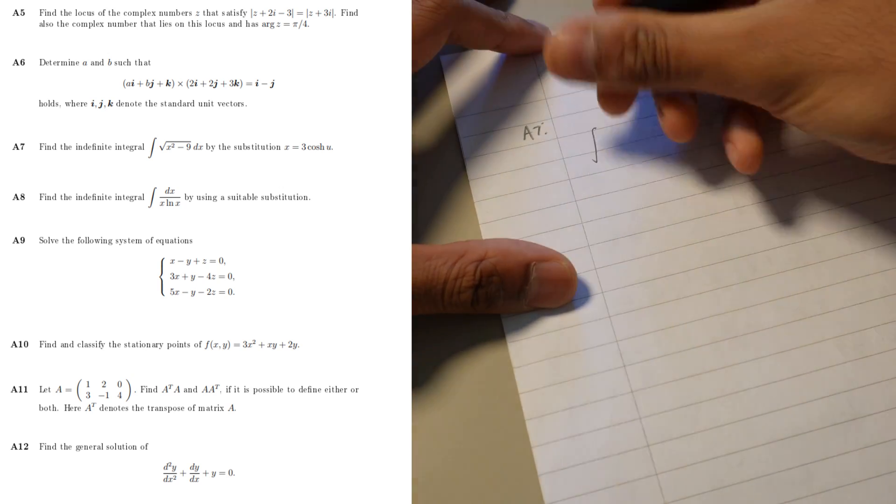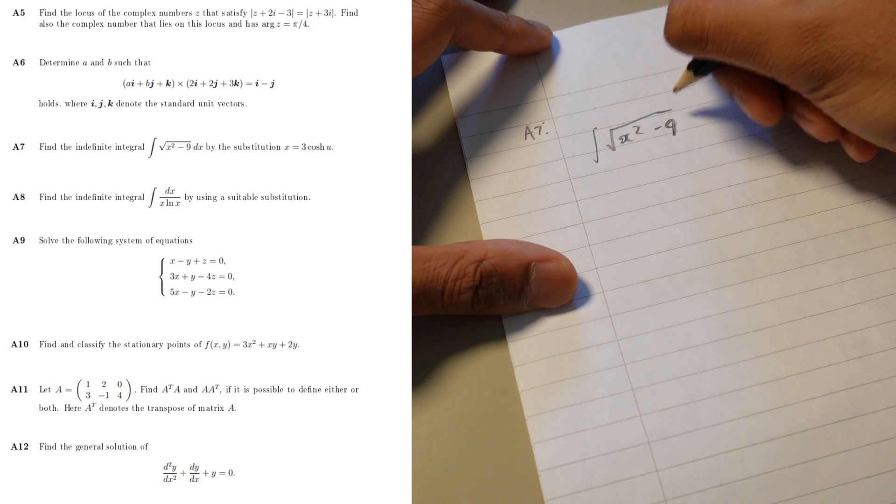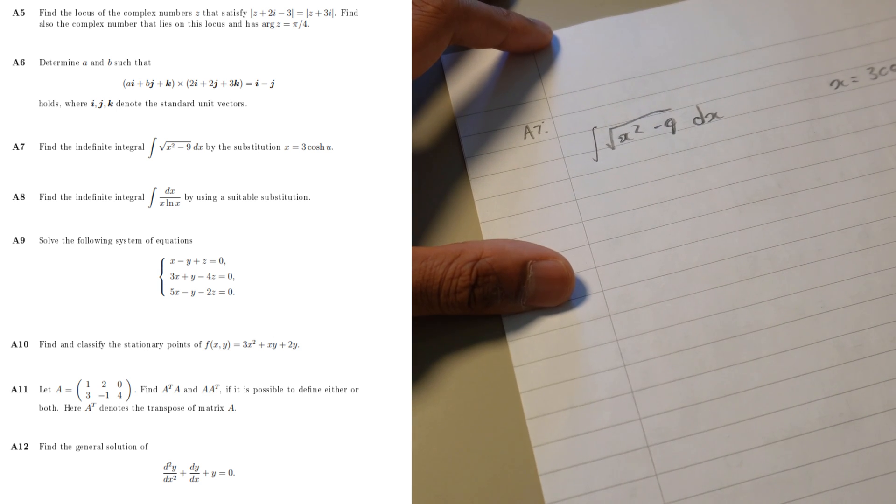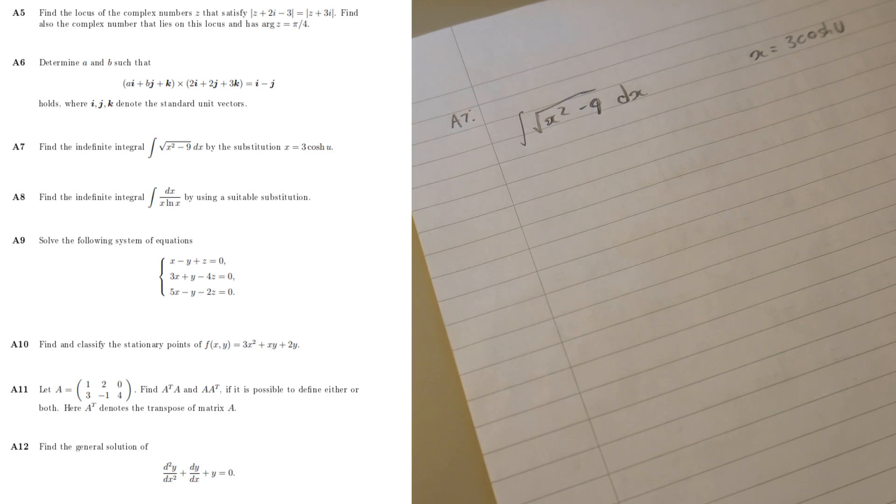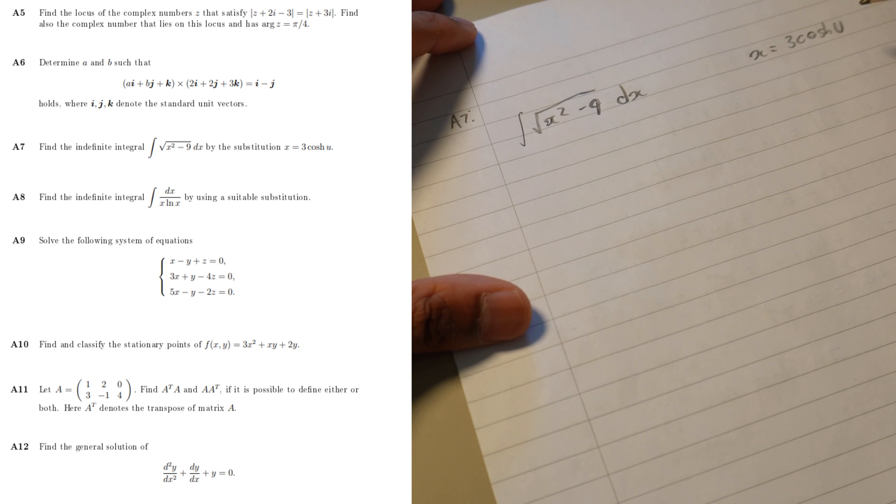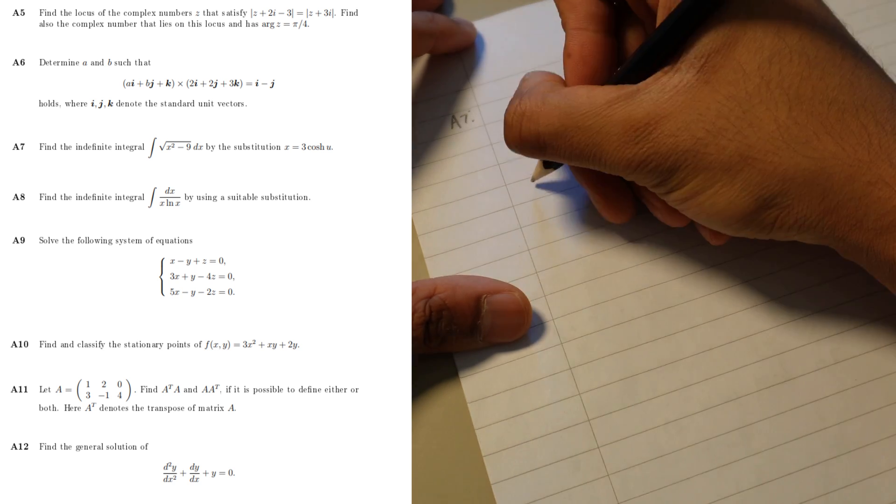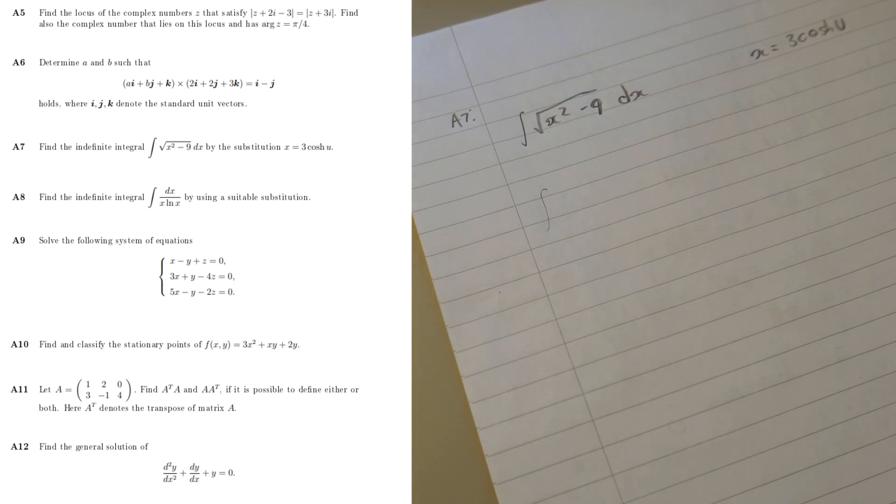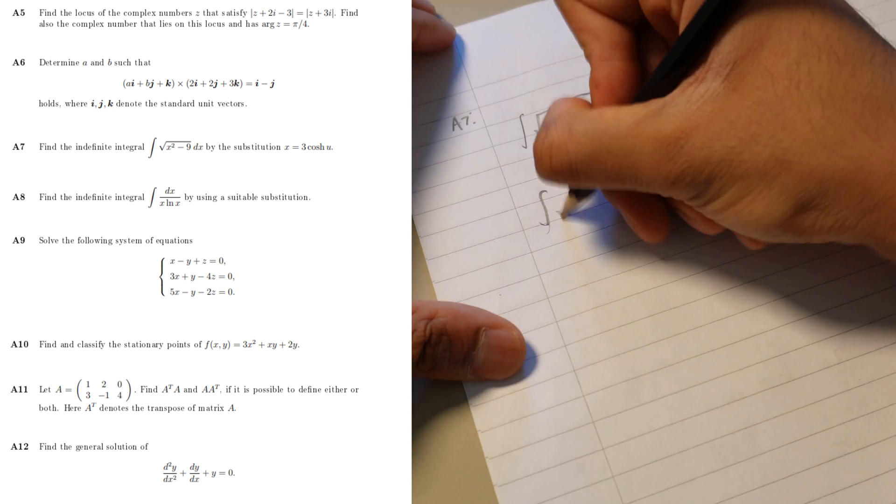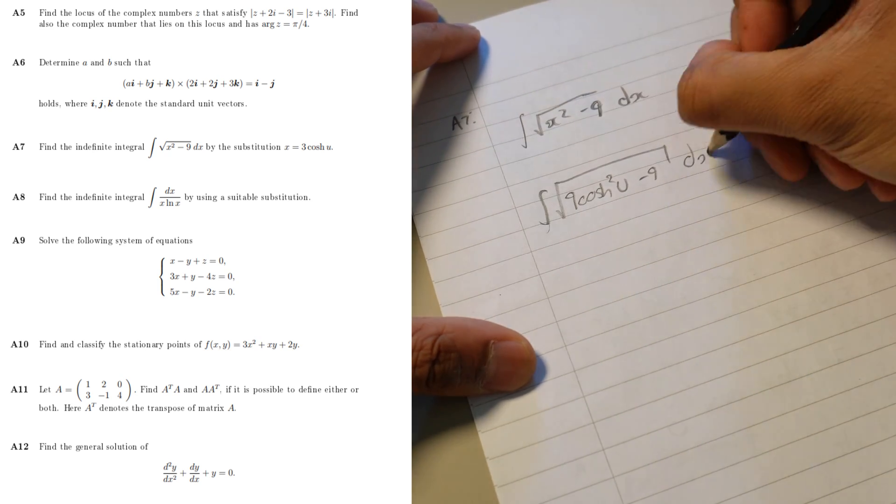This last question is all to do with basically an integration using substitution. I found these questions probably the most annoying because there's so many steps to it. I think one of the main things is that I just really couldn't remember the full method of how you would do this sort of thing, especially in terms of like what does cosh squared minus whatever integrate to.